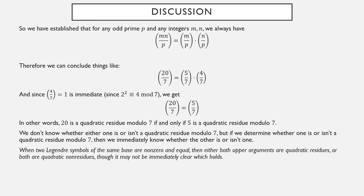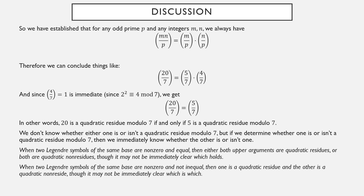So if we have two Legendre symbols of the same base that are both nonzero and equal, we interpret that as: both upper arguments are quadratic residues or both are quadratic non-residues. You still have to figure out which holds, but either they're both quadratic residues or both quadratic non-residues. If instead two Legendre symbols of the same base are both nonzero but unequal, then one must be positive one and the other negative one — meaning one upper value is a quadratic residue and the other is a quadratic non-residue. If you can determine one, you automatically determine the other.